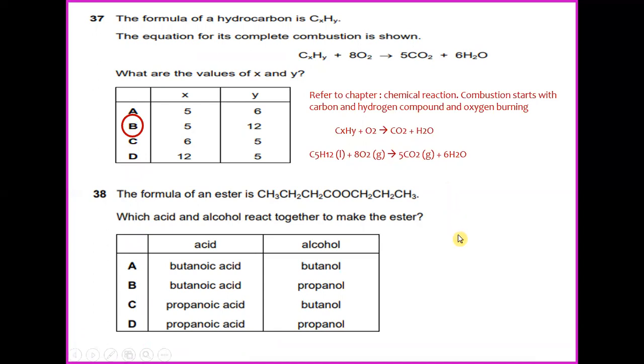The formula of an ester is CH3 CH2 CH2 CH2 COO CH2 CH2 CH3. Which acid and alcohol react together to make the ester? The answer would be pentanoic acid and propanol.